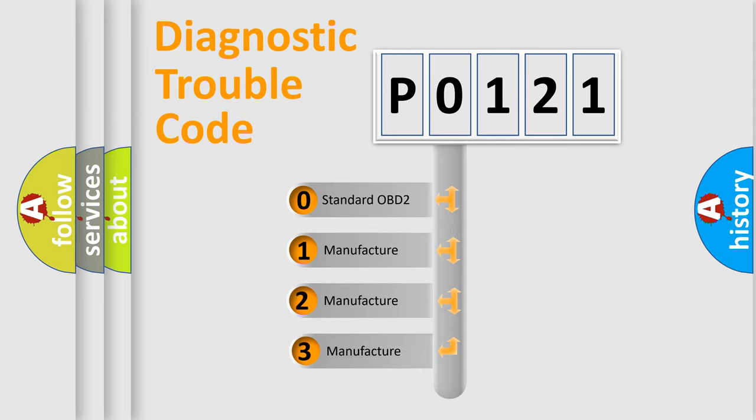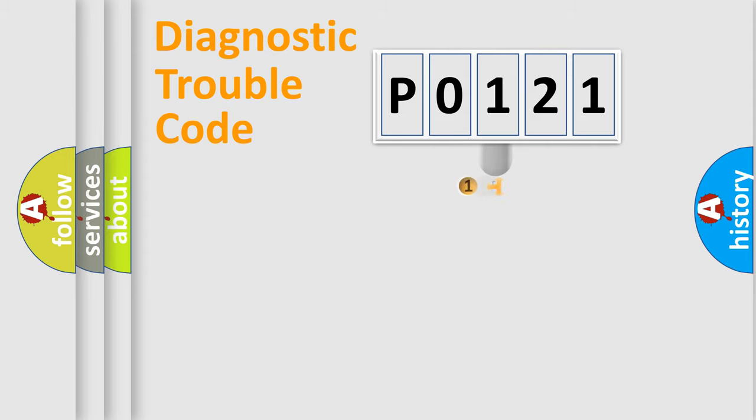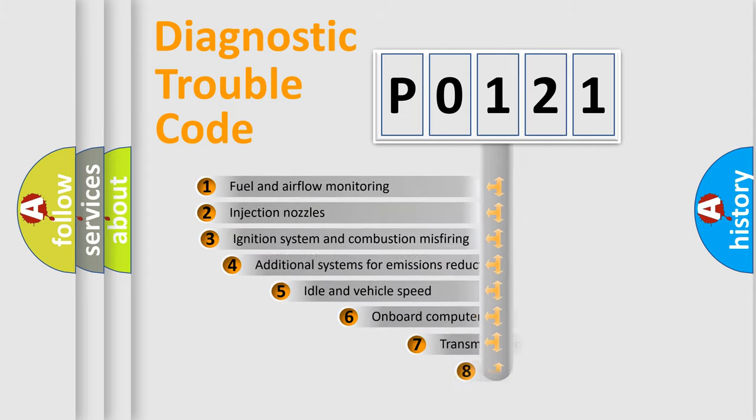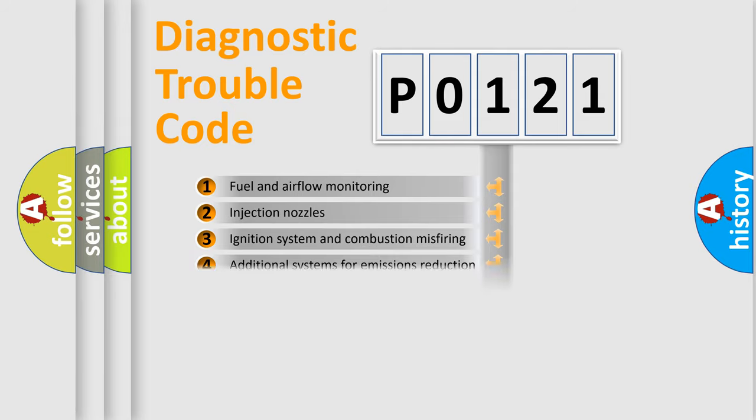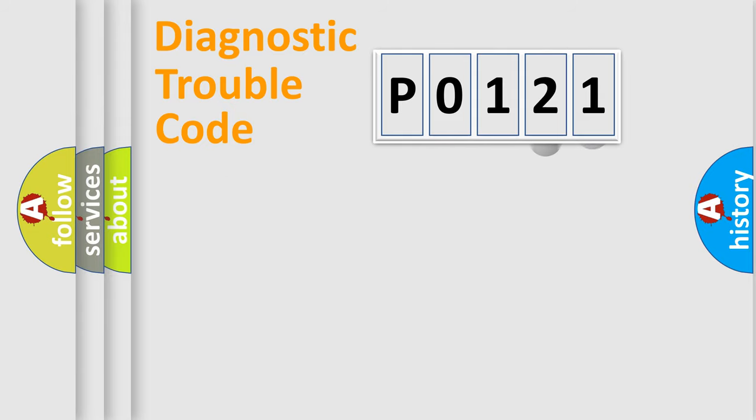If the second character is expressed as zero, it is a standardized error. In the case of numbers 1, 2, 3, it is a car specific error. The third character specifies a subset of errors. The distribution shown is valid only for the standardized DTC code.